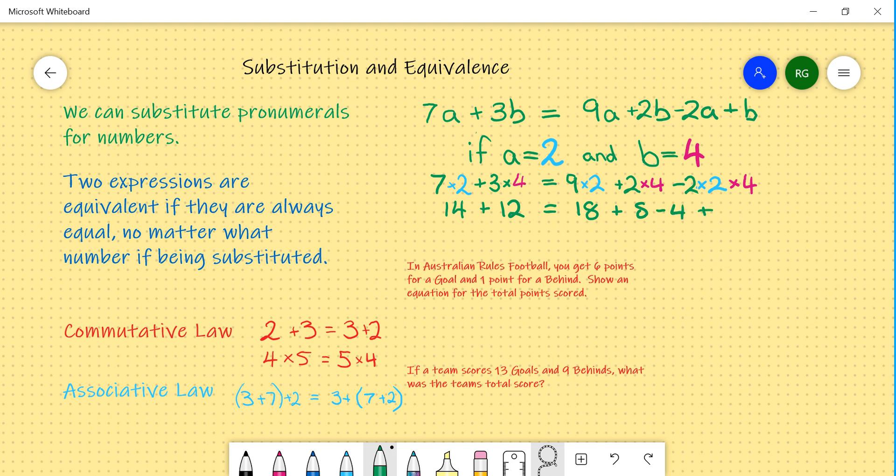That should be plus 4. If I then take that to the next step, we get 26 is equal to 18 plus 8 is 26 minus 4, 22 plus 4, 26. And as you can see, our equations are equivalent.